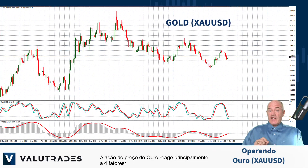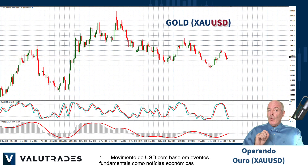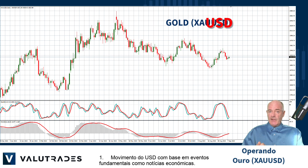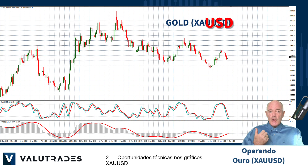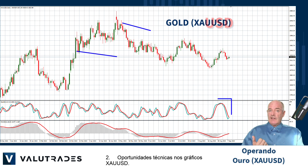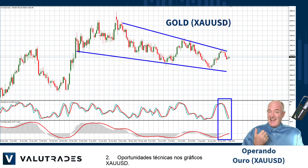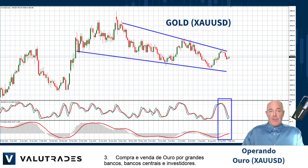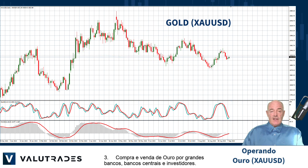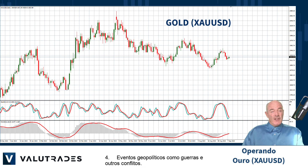Price action on gold reacts mainly to four factors: 1. Movement of the US dollar based on fundamental events like economic news. 2. Technical opportunities on the XAU/USD charts. 3. Buying and selling of gold by big banks, central banks, and investors. 4. Geopolitical events like wars and other conflicts.